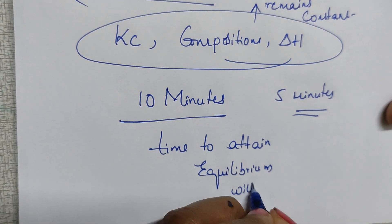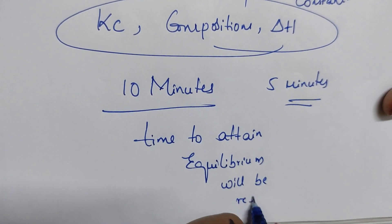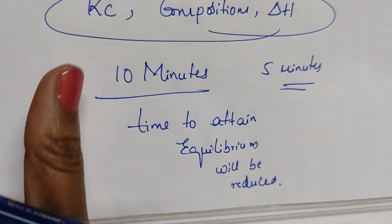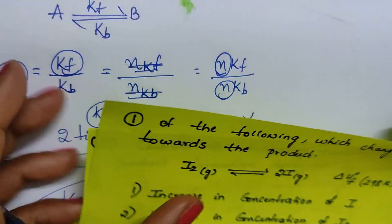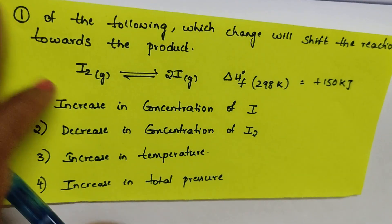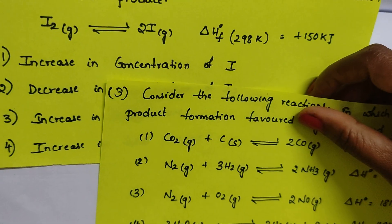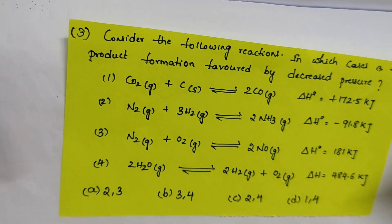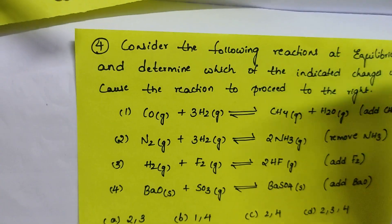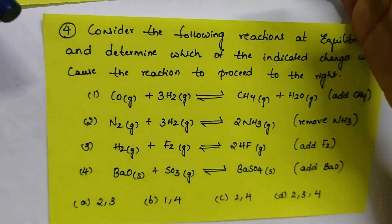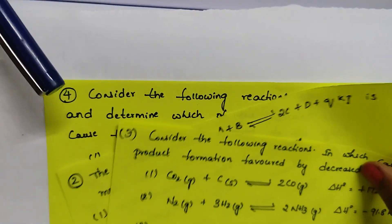Now I will give you some questions — take a screenshot. Try Questions 1, 2, 3, and 4 on your own. In the next video I will give solutions to those. There are also more tricks, such as what happens when you add an inert gas at constant volume, or add an inert gas at constant pressure.